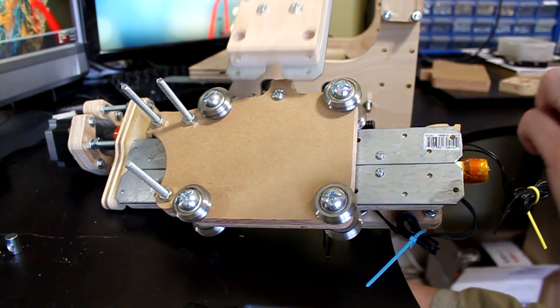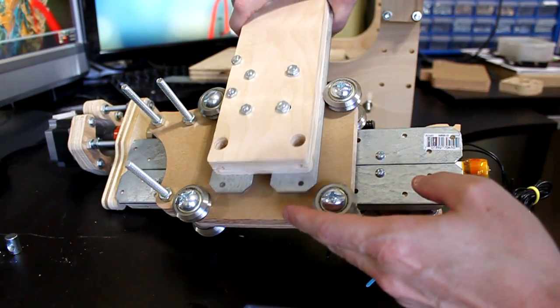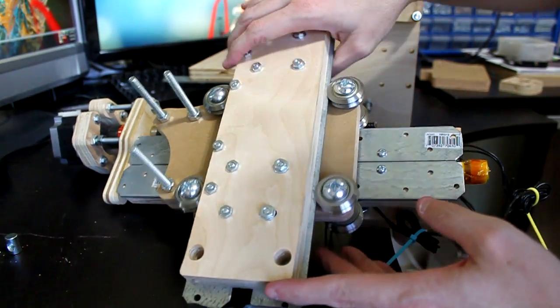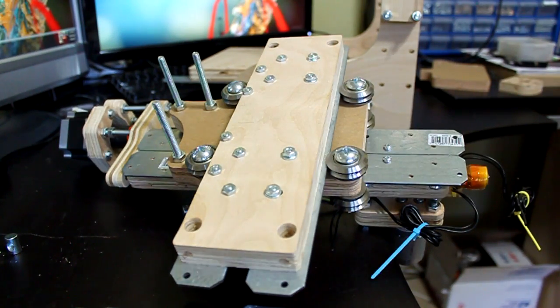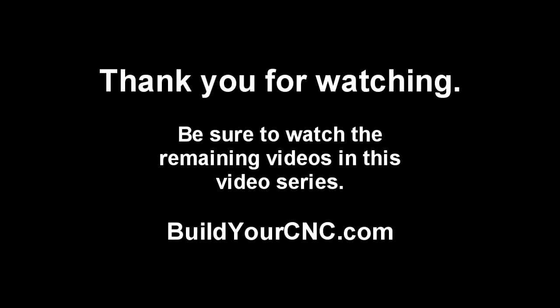Now the y-axis rail can be positioned between the bearings, the four bearings, on the ZY plate as shown.